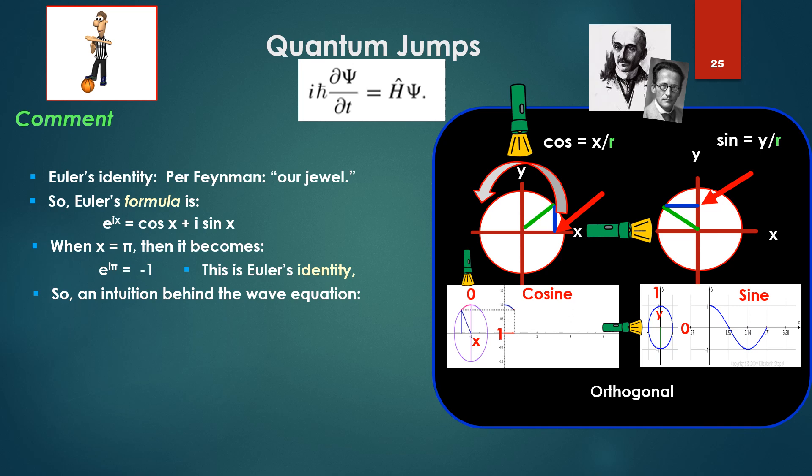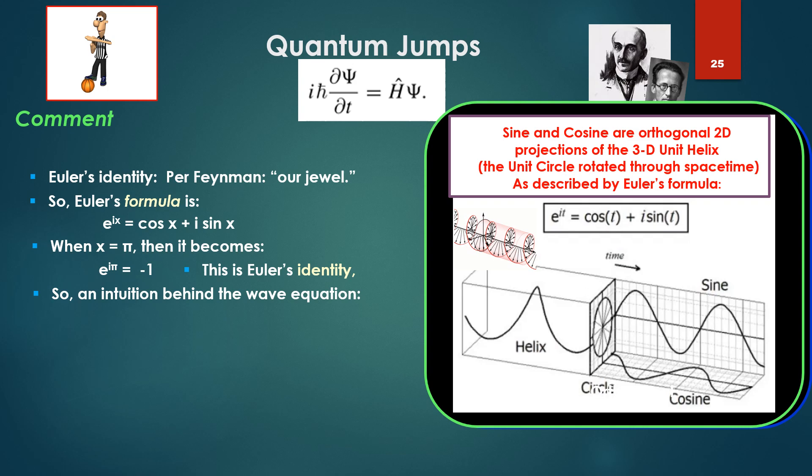Put it in motion with our flashlight. Note the flashlight at right angles to the previous flashlight. That's an orthogonal projection. The sine sweeps around, as the radius sweeps around, projecting on the y-axis. And at the 0 point there, there is no projection on the y-axis. It's 0. So we have this orthogonal projection. So this is the intuition behind the wave equation. In fact, you have our clock, sine and cosine, orthogonal 2D projections, of what's called the 3D unit helix up there in the middle corner as we rotate through space-time as described by Euler's formula.